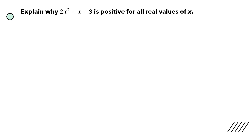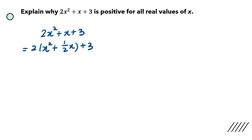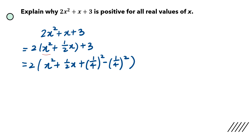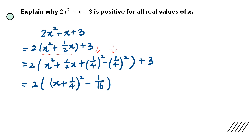Looking at the function given, step number one: we need to factorize 2 out from the x squared plus x term, and leave the positive 3 alone. Then we complete the square for x squared plus half x. The coefficient of x is a half, so we take half divided by 2, which gives one quarter. So you add the square of one quarter and then take it away. Don't forget you still have your plus 3 there.